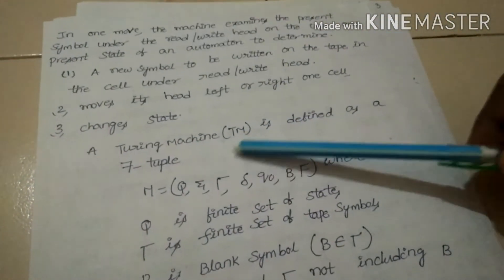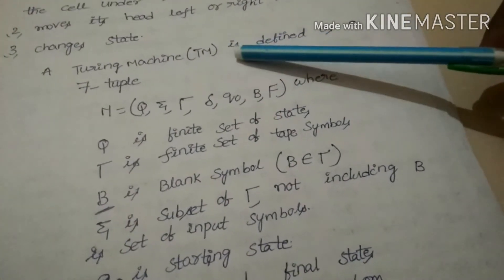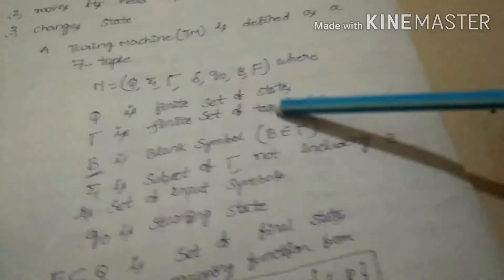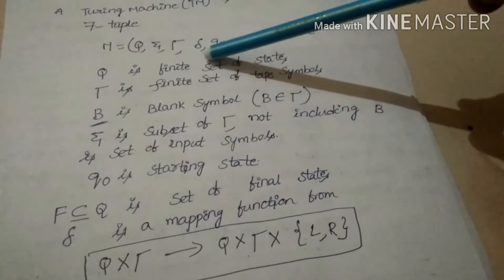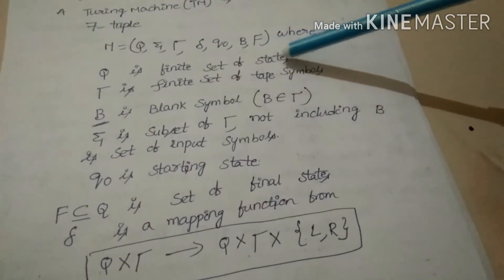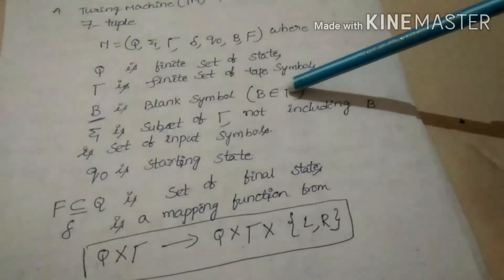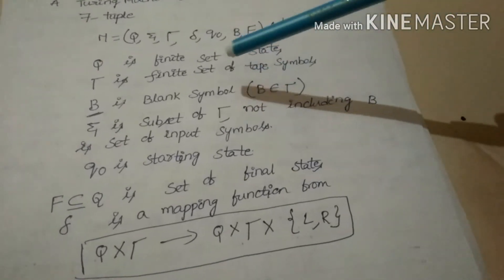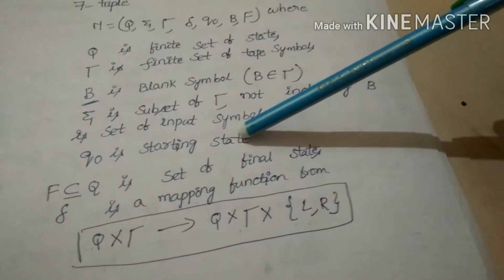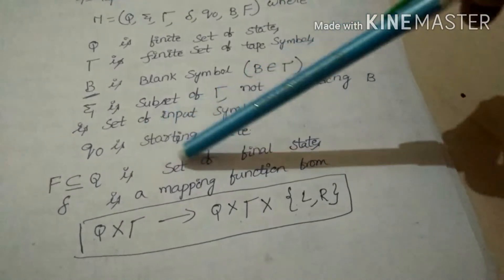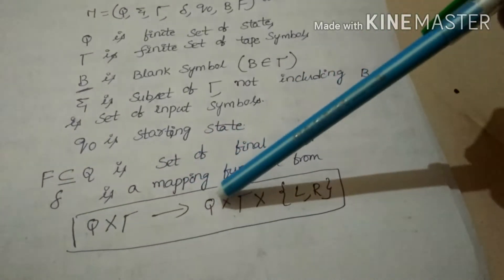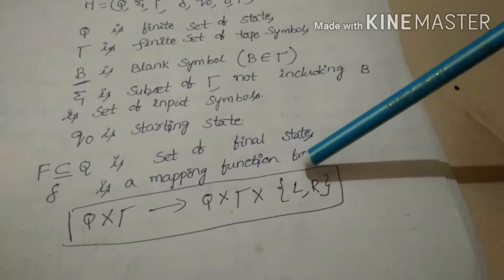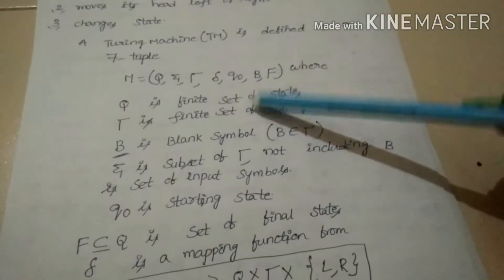The Turing machine is defined by a 7-tuple. This is the formal definition of the Turing machine: M = (Q, Σ, τ, δ, Q0, B, F). Where Q is the finite set of states, τ is the finite set of tape symbols, B is the blank symbol where B belongs to τ, Σ is the set of input symbols, Q0 is the starting state, F is the set of final states, and δ is the mapping function from Q × τ to Q × τ × {L, R}, where L means left and R means right.